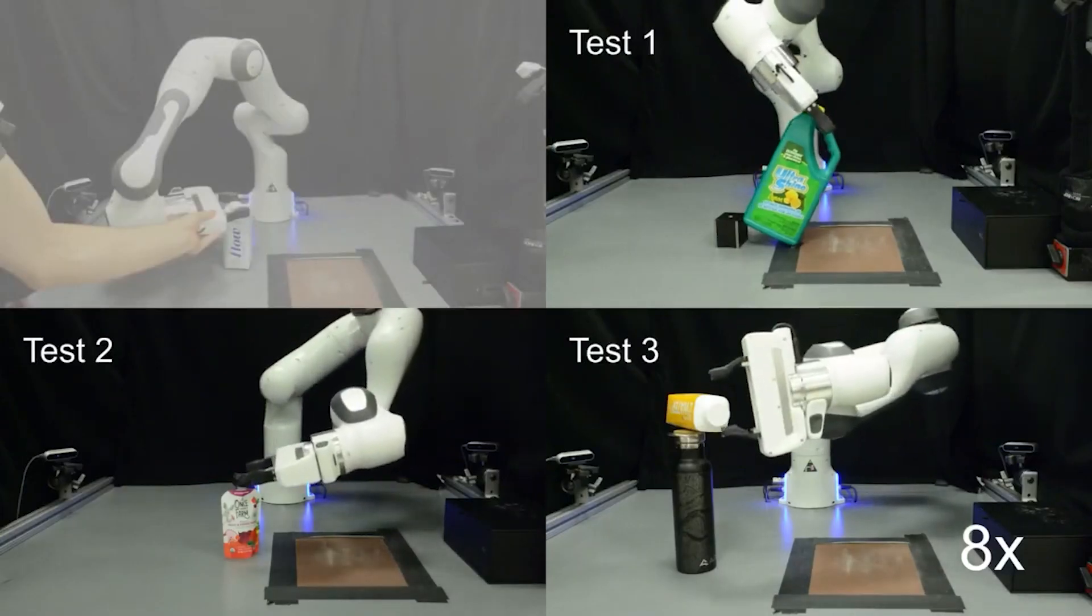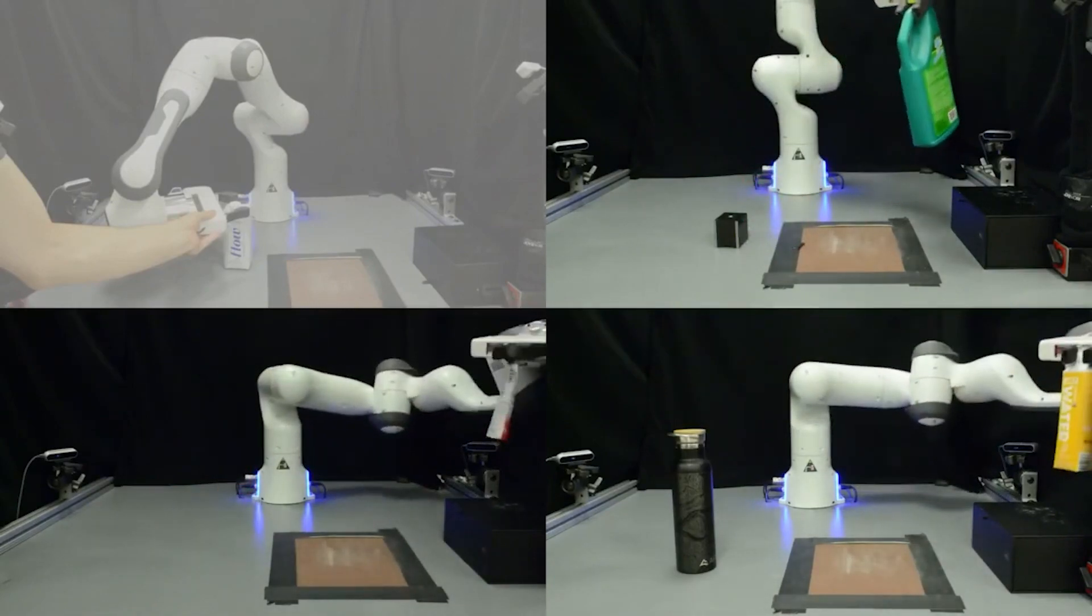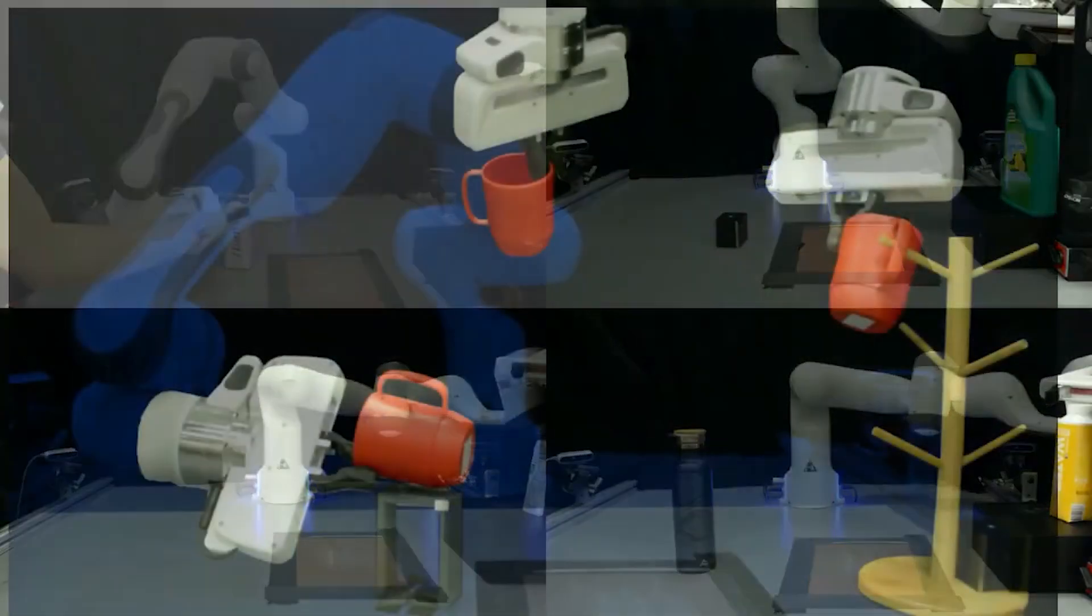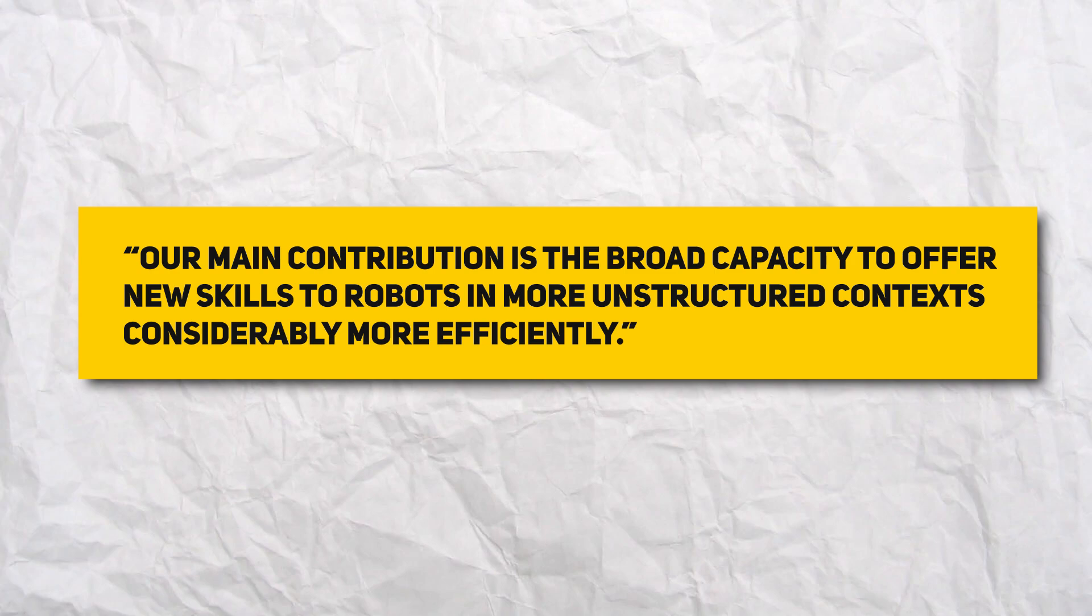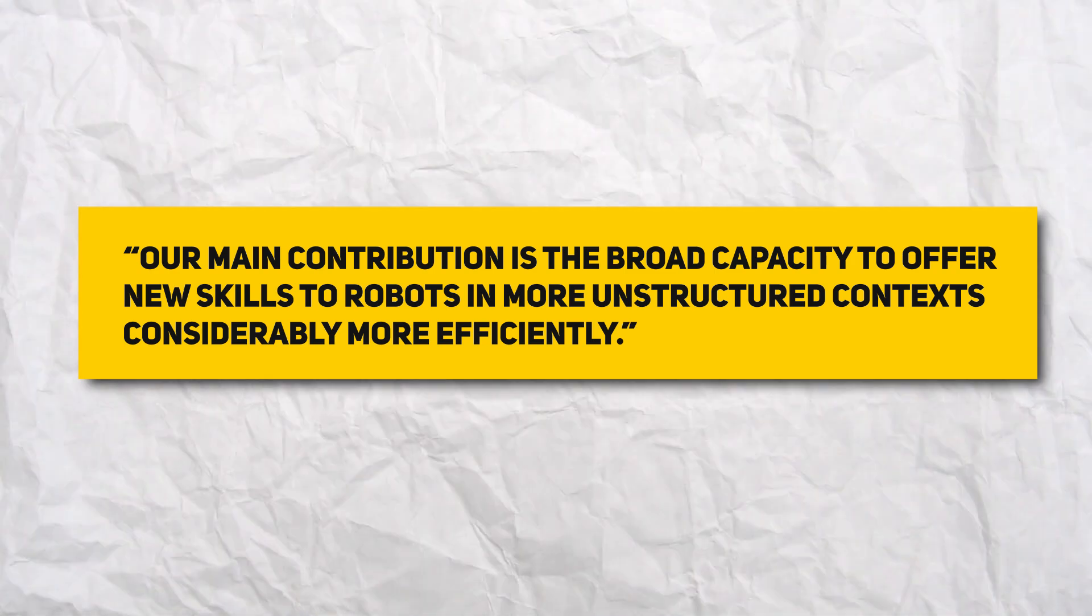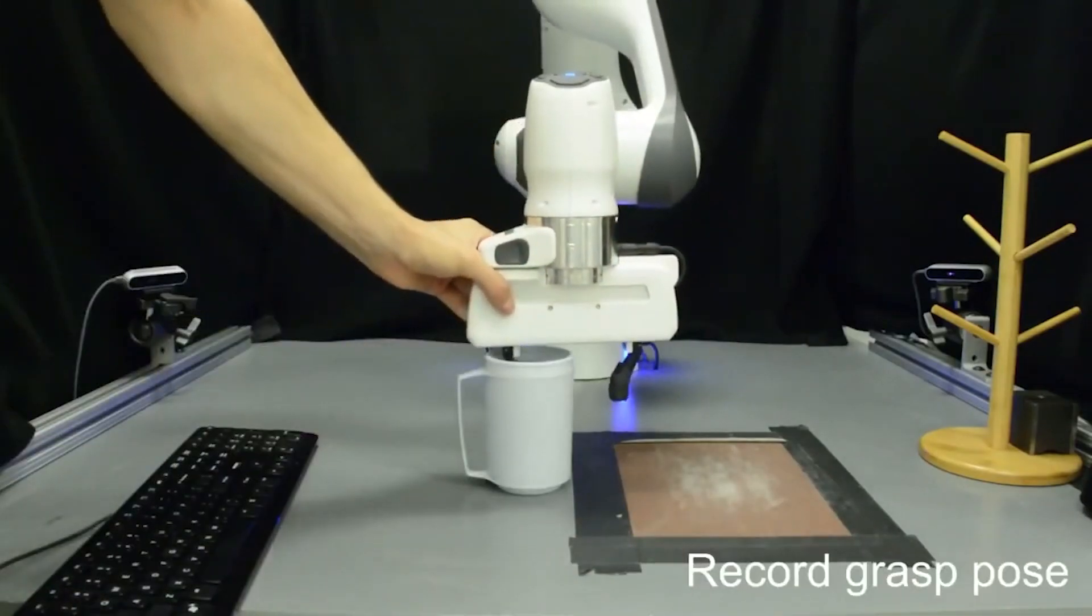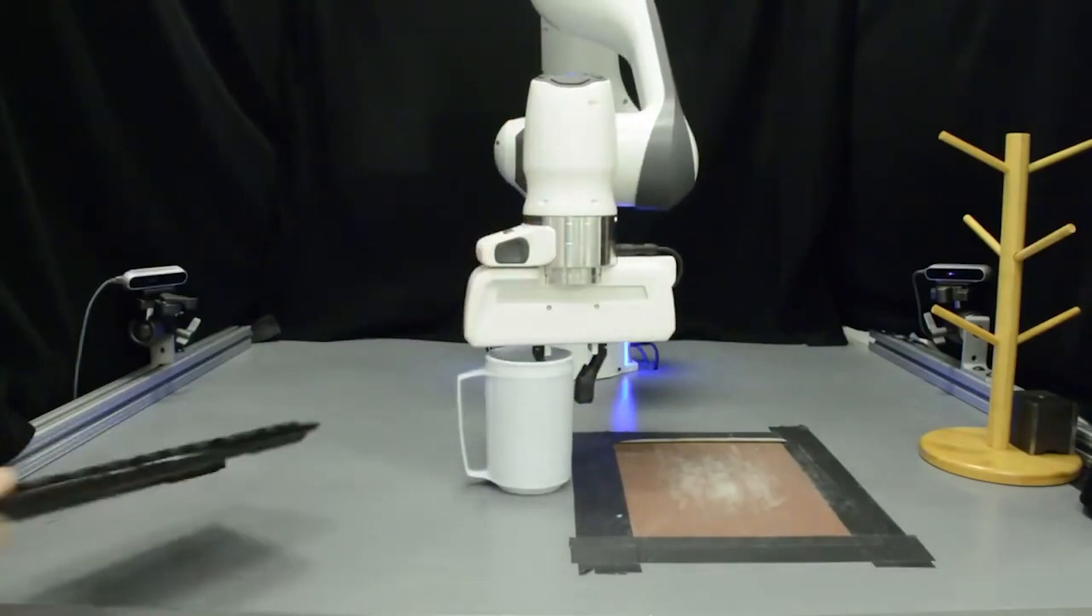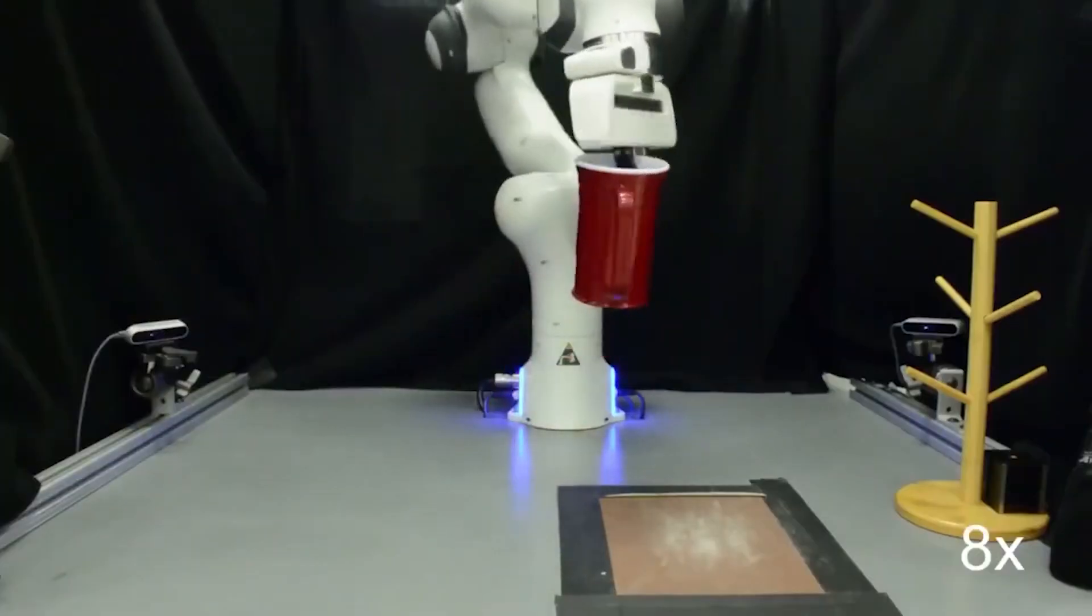Using just 10 samples, the researchers demonstrated that the system can manipulate never-before-seen mugs, bowls, and bottles organized arbitrarily using simulations and a robotic arm. Our main contribution is the broad capacity to offer new skills to robots in more unstructured contexts, considerably more efficiently. It took only a few human demonstrations for a robot to learn a new pick-and-place task.